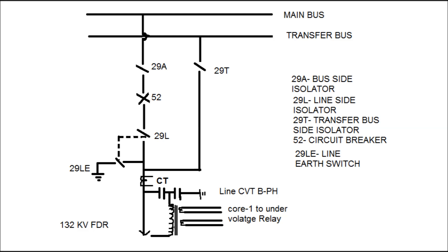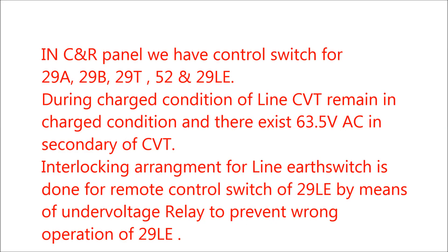The CBT secondary — that is, B phase secondary — is taken to the input of the under voltage relay in the control and relay panel. We have control switches for 29A, 29B, 29L, 52, and also for the line earth switch. During the charged condition of the line, the CBT remains in a charged condition, and therefore the CBT secondary has 63.5 volt AC in the secondary.